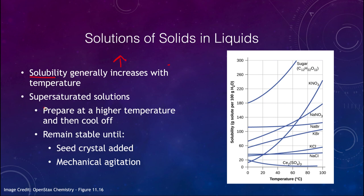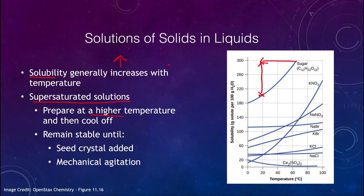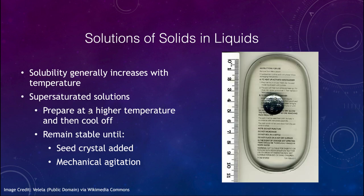We can also create supersaturated solutions, which are over-saturated beyond what should be held at a given temperature. This can be done by preparing the solution at a higher temperature and then cooling it down. If you maintain that concentration while cooling, you are supersaturated — more dissolved than should be possible at that temperature. These can remain stable until something disturbs them, such as adding a seed crystal or applying mechanical agitation.